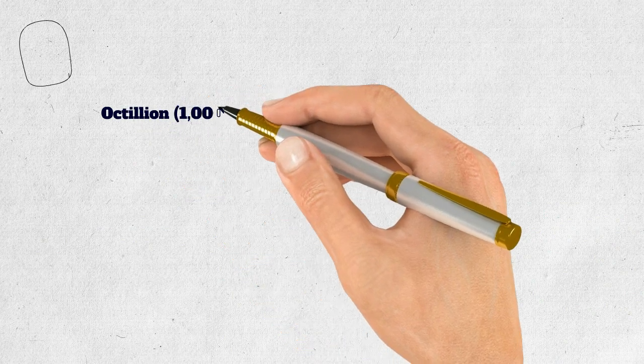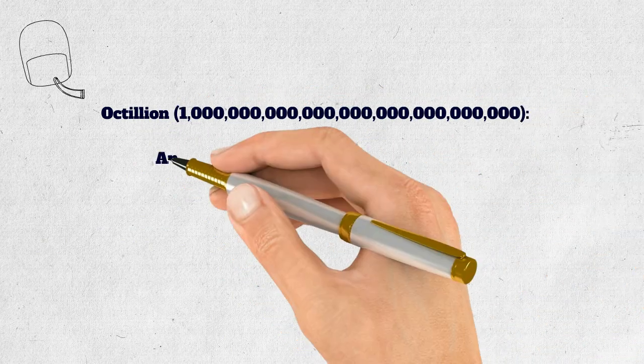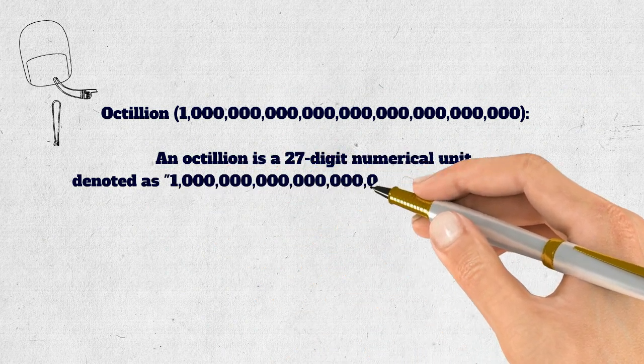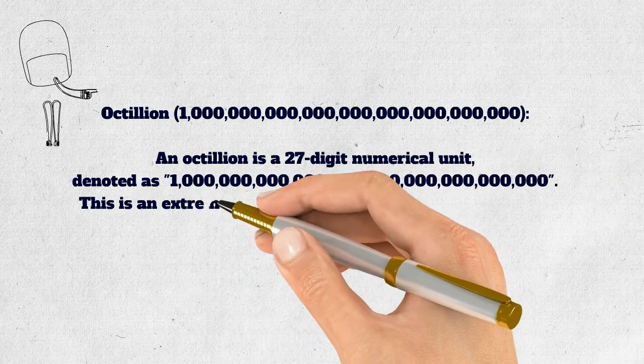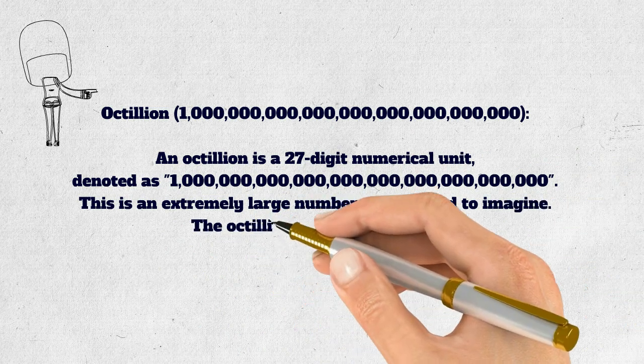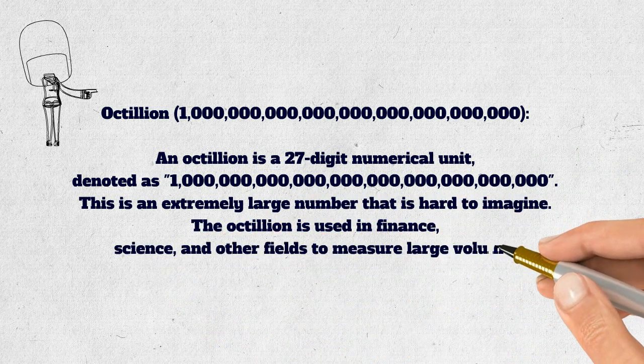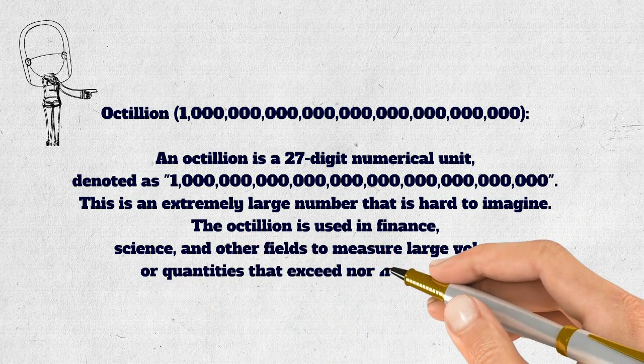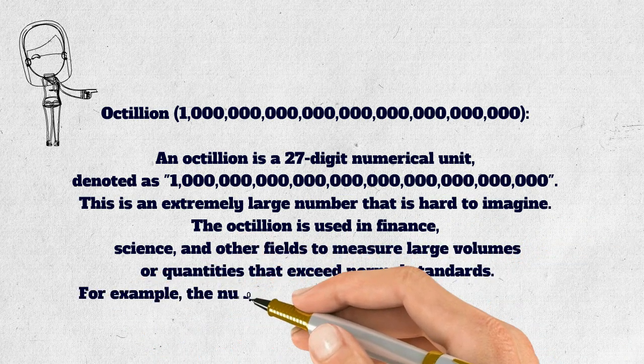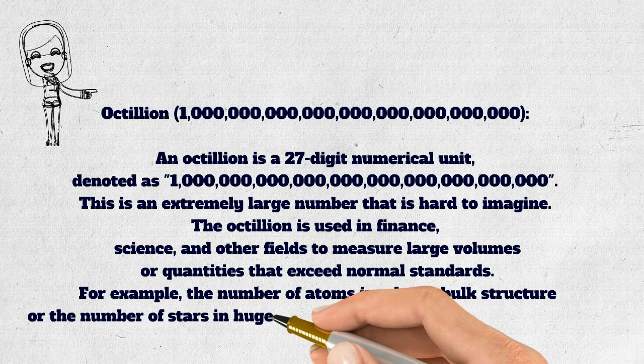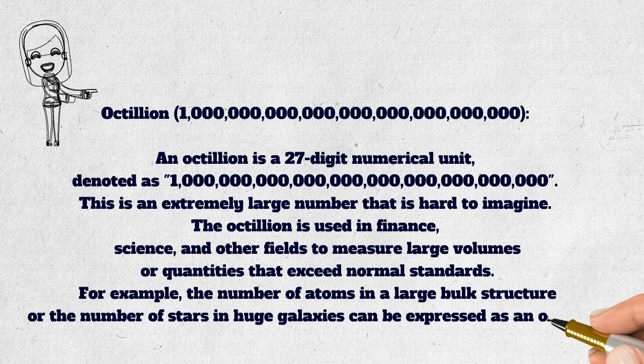Octillion. An octillion is a 27-digit numerical unit. This is an extremely large number that is hard to imagine. The octillion is used in finance, science, and other fields to measure large volumes or quantities that exceed normal standards. For example, the number of atoms in a large bulk structure or the number of stars in huge galaxies can be expressed as an octillion.